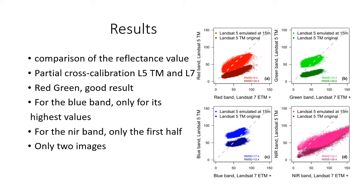Here we see that we achieve partial cross calibration between L7 and the emulated L5. For the green and the red bands, we have good results, very close to the 1-to-1 line, and an important reduction of the root mean square error.